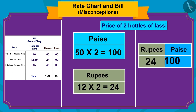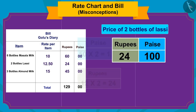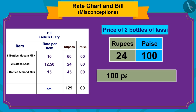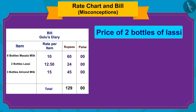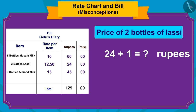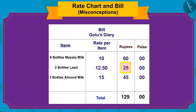Golu calculated the amount correctly while finding the total price of lassi, but when he wrote 100 paise as one rupee, he forgot to add it to the number twenty-four. So what should be the cost of two bottles of lassi? Yes — 25 rupees!